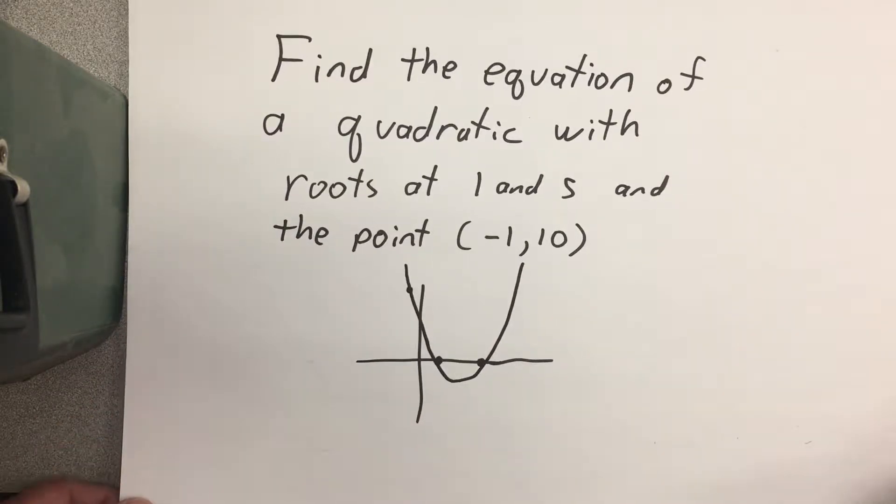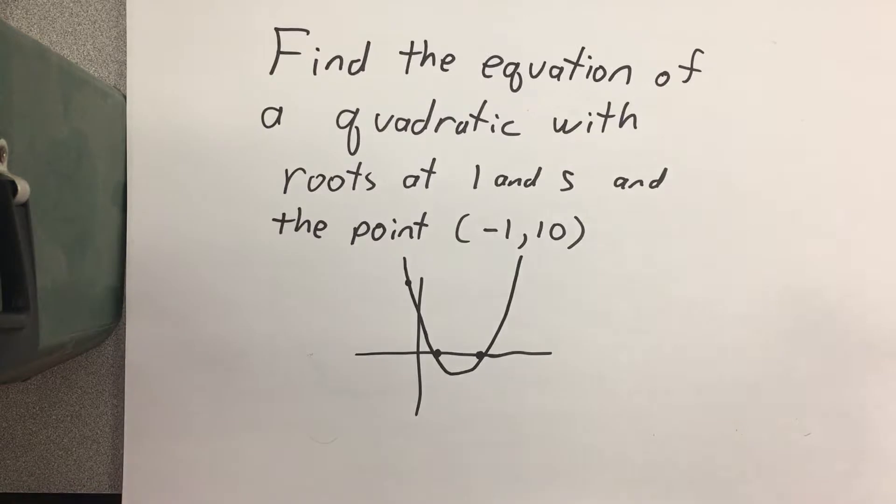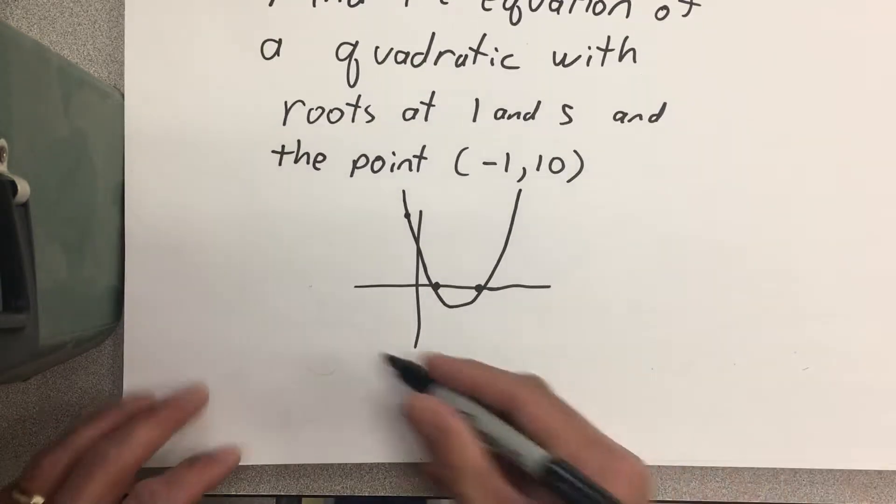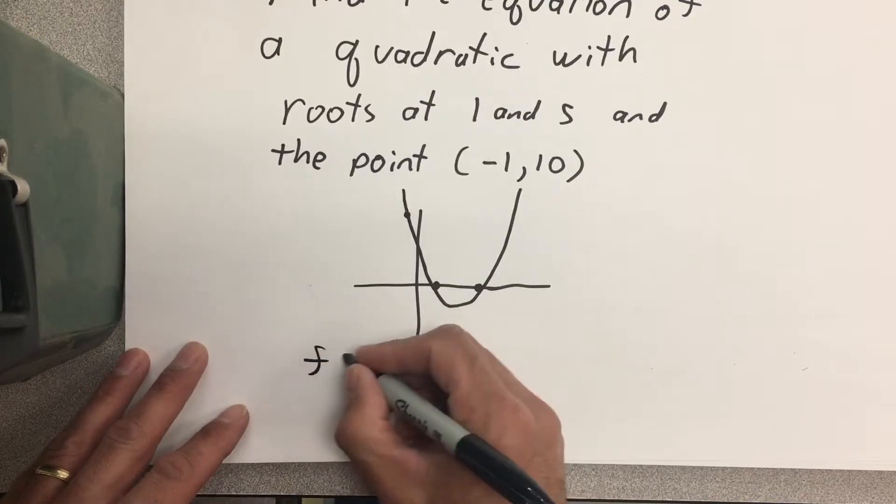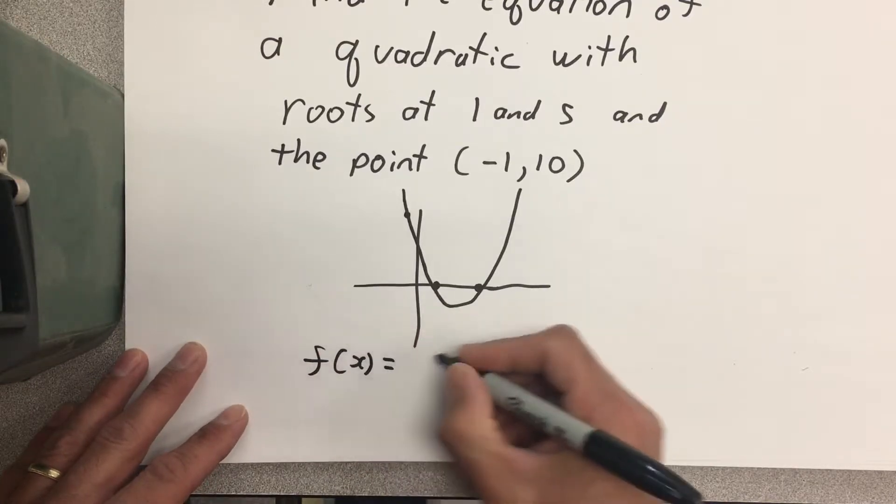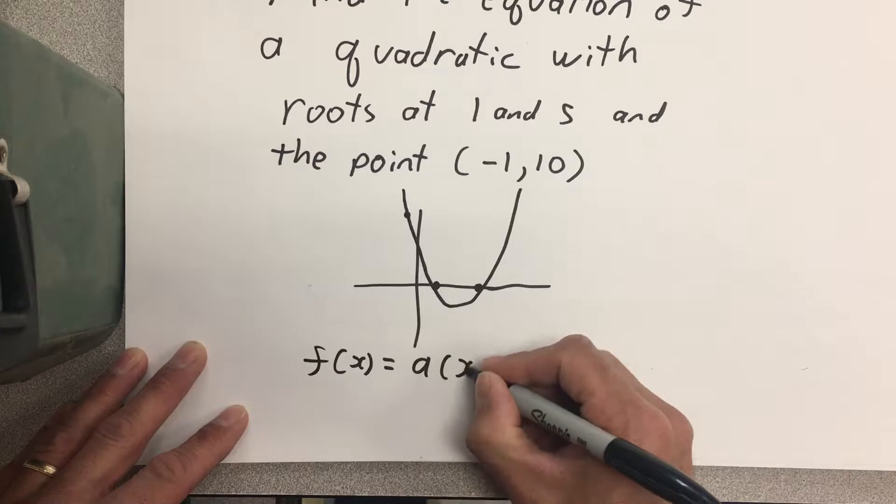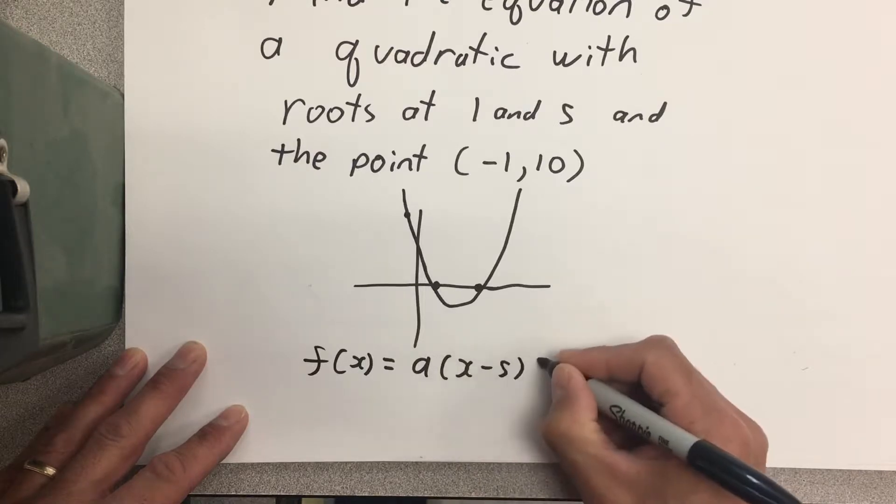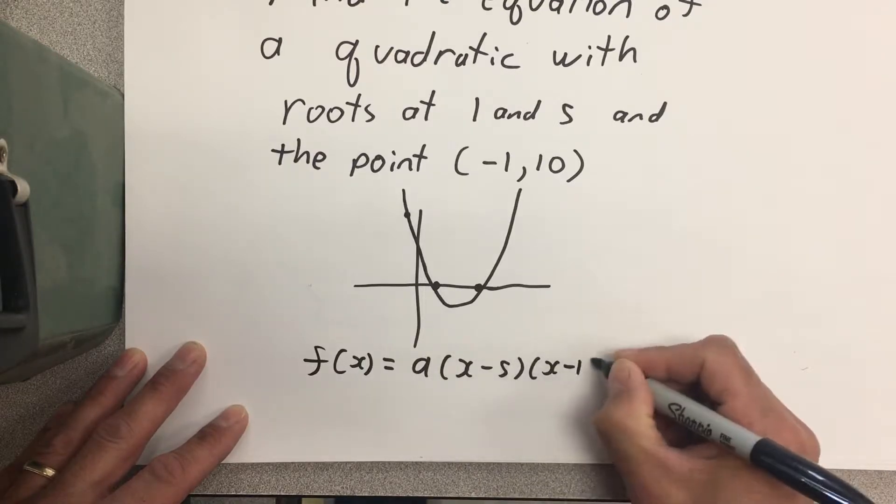To start out, we're going to write down the equation with most of the known information. I'm going to say that my quadratic function is equal to some number times (x - 5) times (x - 1).